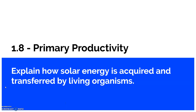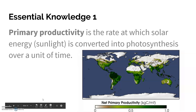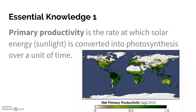1.8 is on primary productivity. It's a big word, but it's really not that difficult of a concept — you just have to put fancier terms on it. The goal of this is to explain how solar energy is acquired and transferred by living organisms. Primary productivity is basically just how much photosynthesis is happening, looking at the rate at which solar energy is being converted into glucose and all the other byproducts of photosynthesis over a unit of time.